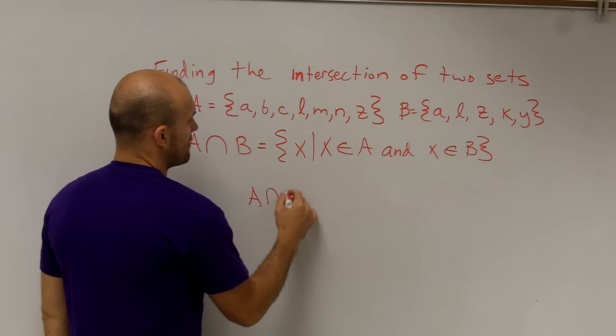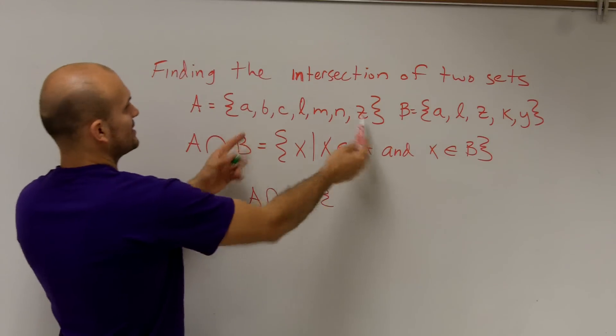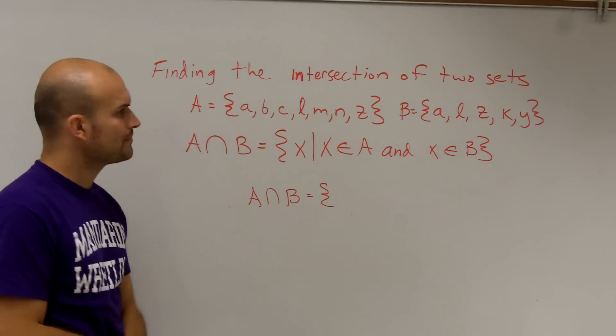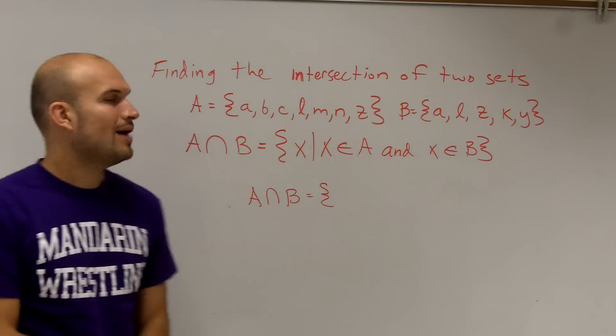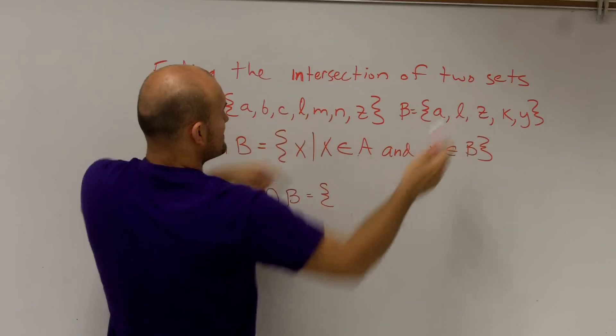So we look at this. What are my only elements or members that are in both sets? In set A, I have a, b, c, l, m, n, z. In set B, I have a, l, z, k, y. Well, we notice they both have an a, they both have an l, they both have a z.